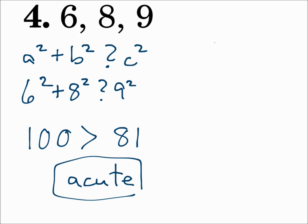So remember: if it's a right triangle, the Pythagorean Theorem will work — a squared plus b squared equals c squared, where a and b are the legs and c is the hypotenuse. If you know the side lengths of a triangle, test a squared plus b squared equals c squared. If it works, then it's a right triangle. If a squared plus b squared is greater than c squared, it's an acute triangle. And if a squared plus b squared is less than c squared, then it's obtuse.